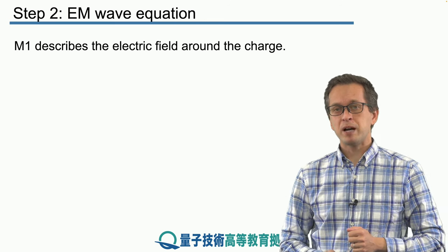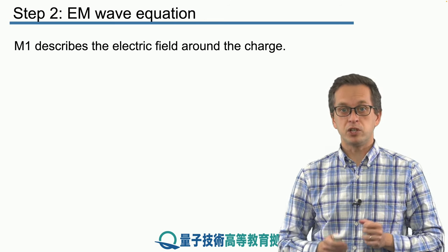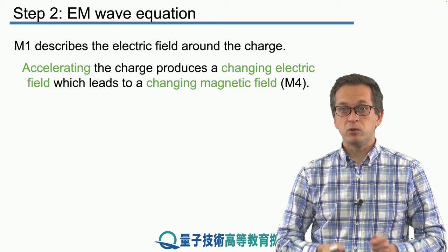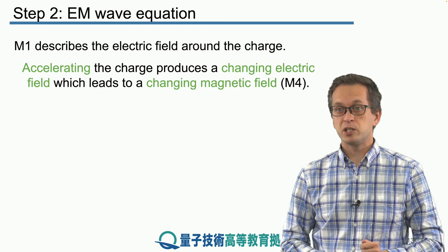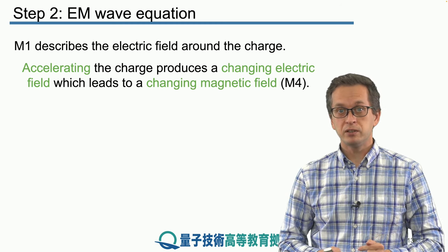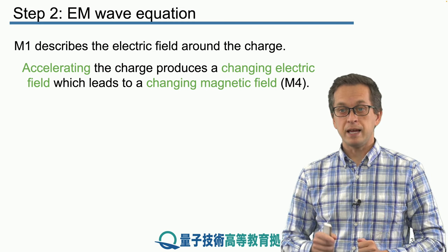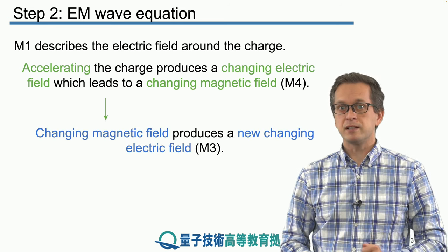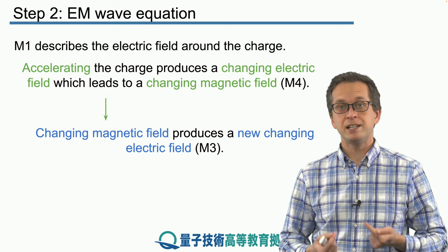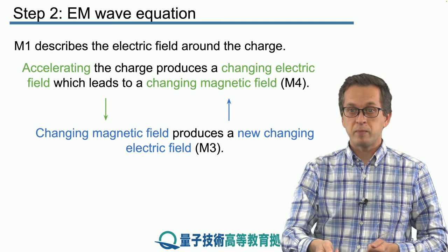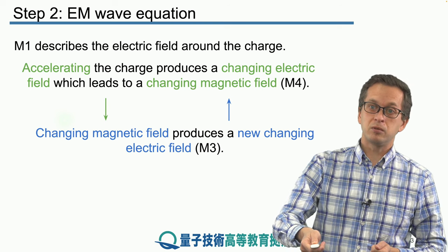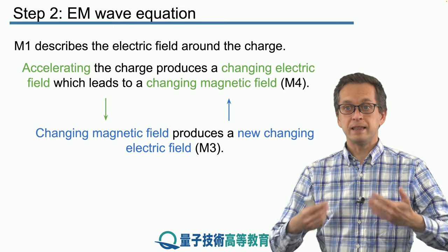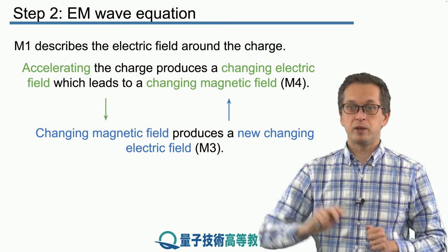Maxwell's first equation describes the electric field around a charge. To create electromagnetic waves, we need to accelerate the charge, because accelerating charges produce a change in electric field, which leads to a changing magnetic field as we know from Maxwell's fourth equation. Maxwell's third equation tells us that a changing magnetic field produces a changing electric field, which feeds back into producing a changing magnetic field, and so on — maintaining the wave so it propagates through space.